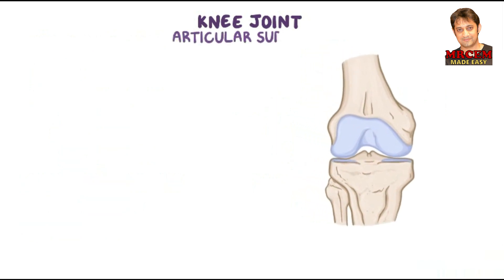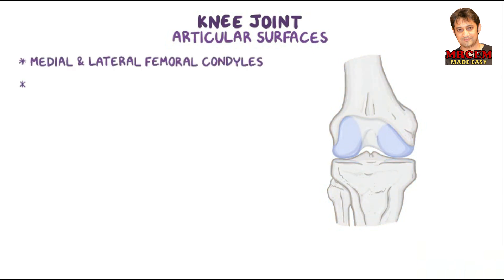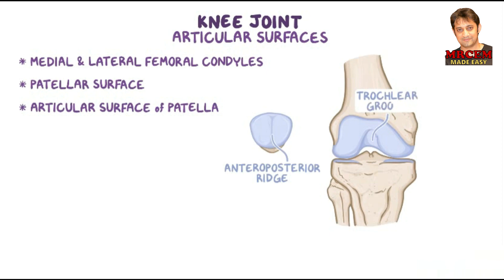The articular surfaces of the knee joint are the medial and lateral femoral condyles, the patellar surface of the femur between these two condyles, and the articular surface of the patella, which is a plateau with an anteroposterior ridge that fits into the patellar surface — known as the trochlear groove.